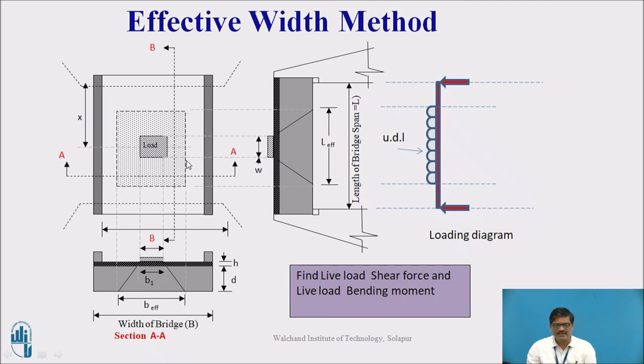That is B effective into L effective. Load divided by effective area will give me the intensity of UDL and that UDL will assume to act on the beam. Once we get the loading diagram, then we have to find out the shear force that is the support reaction and we have to find out the bending moment.